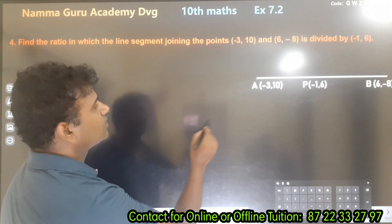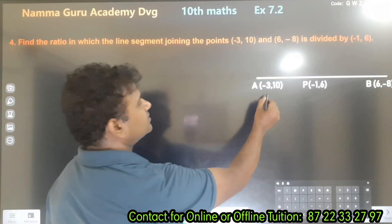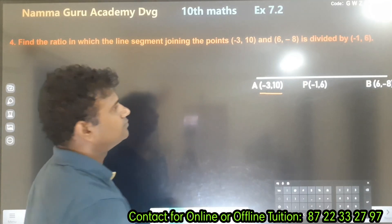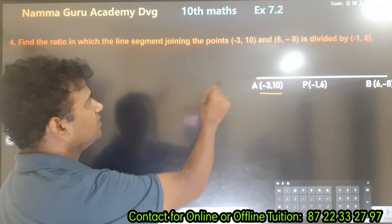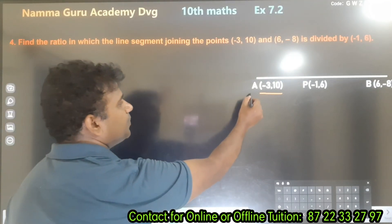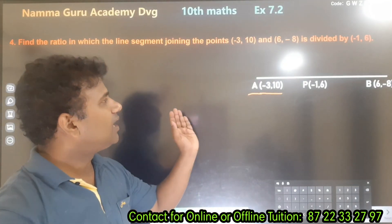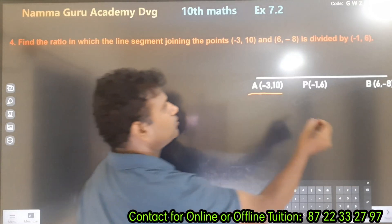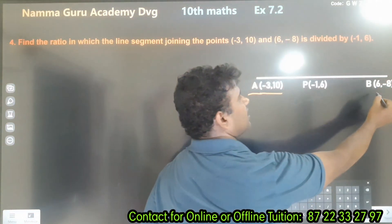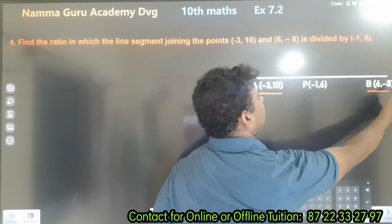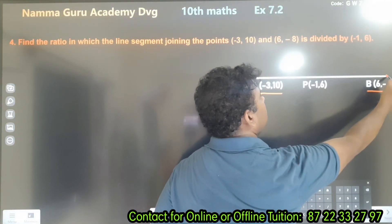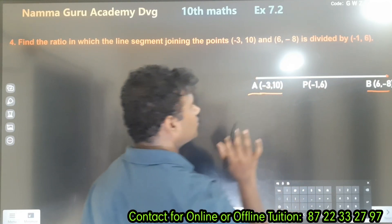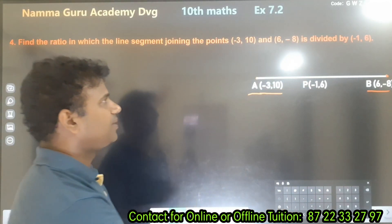The point A is (-3, 10). The point B is (6, -8). This is the line segment AB.